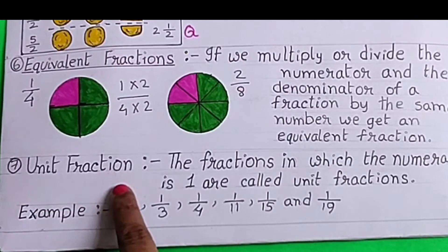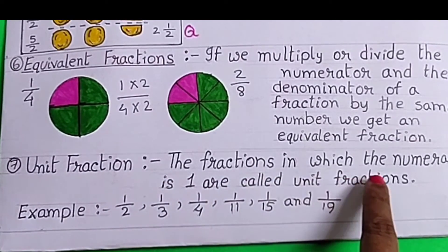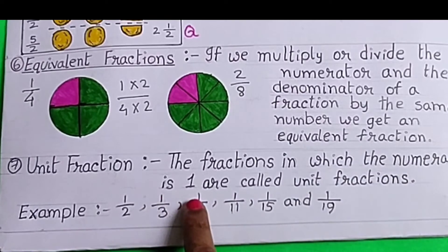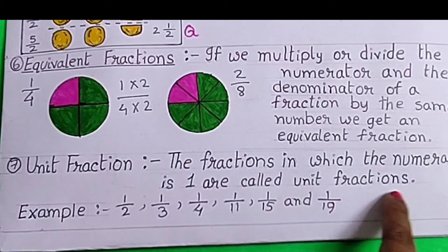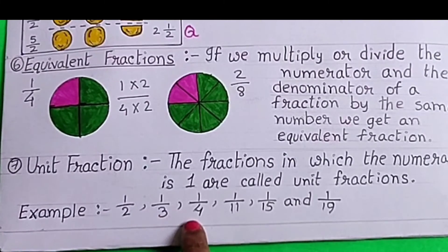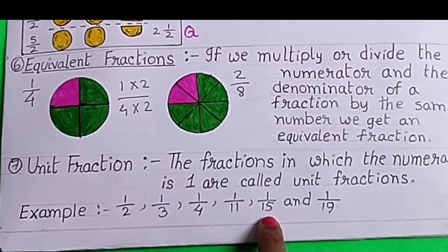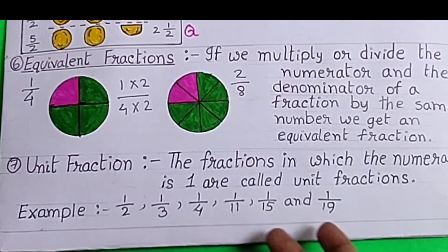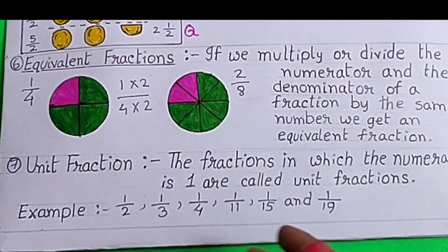Unit Fraction: The fractions in which the numerator is 1 are called unit fractions. For example, 1 by 2, 1 by 3, 1 by 4, 1 by 11, 1 by 15, and 1 by 19. These all fractions have 1 as numerator. These all are unit fractions.